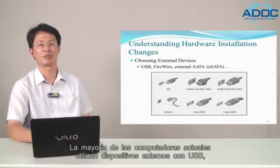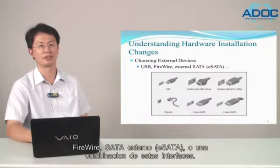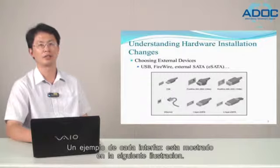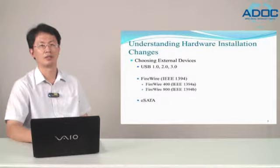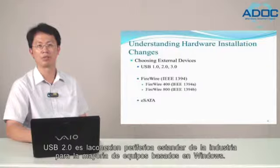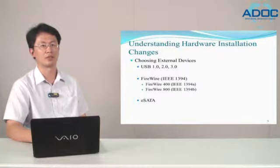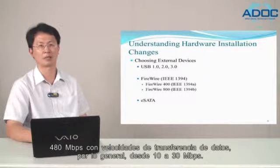Most current computers use external devices with USB, FireWire, external serial ATA, or a combination of these interfaces. An example of each interface is shown in the following illustrations. USB 2.0 is the industry standard peripheral connection for most Windows-based computers, and this connection transfers data at a maximum rate of 480 Mbps.